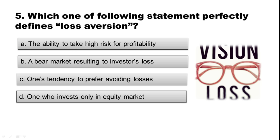Question 5: Which one of the following statements perfectly defines loss aversion? Option A: The ability to take high risk for profitability. Option B: A bear market resulting in investor loss. Option C: One's tendency to prefer avoiding losses. Option D: One who invests only in the equity market. The correct option is Option C — one's tendency to prefer avoiding losses.